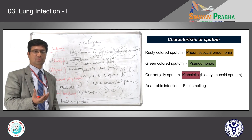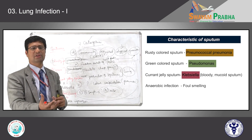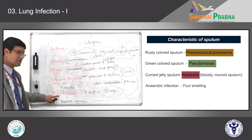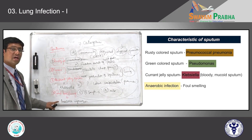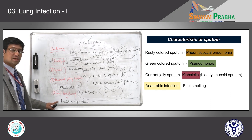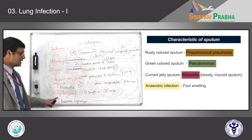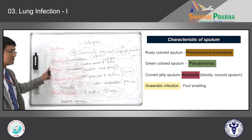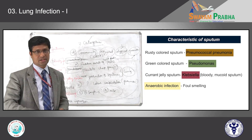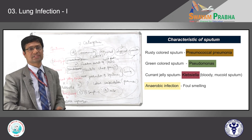To summarize: depending on sputum characteristics, we can presume the causative organism. Rusty color sputum — Pneumococcus; green color sputum — Pseudomonas; current jelly sputum — Klebsiella; foul-smelling sputum — anaerobic organisms. You can treat accordingly with appropriate antibiotics. The further categories of pneumonia will be taken up in the next class.